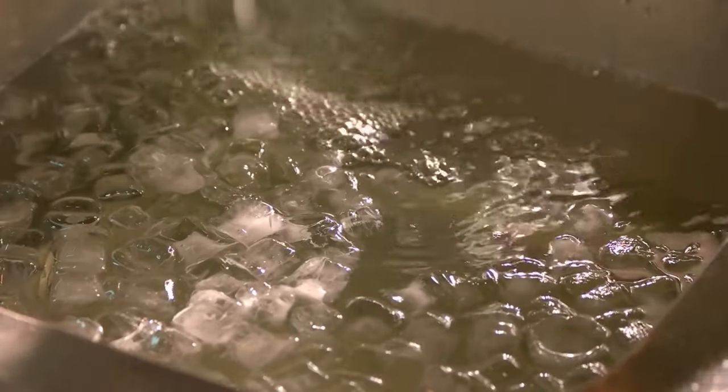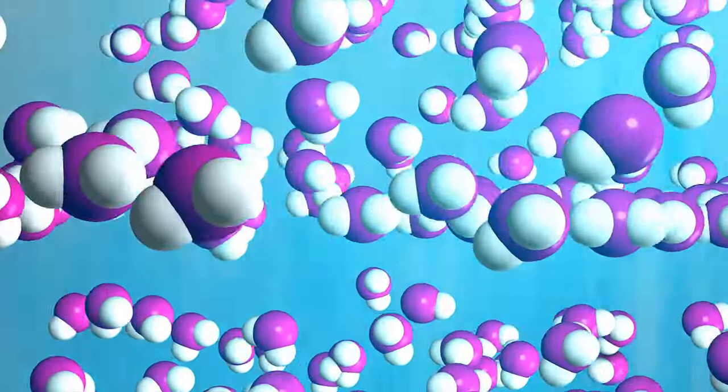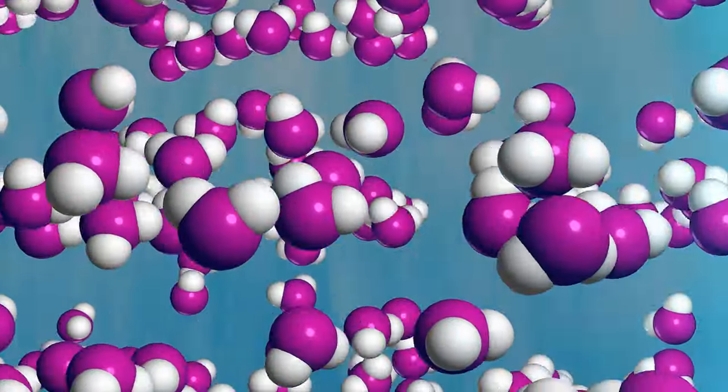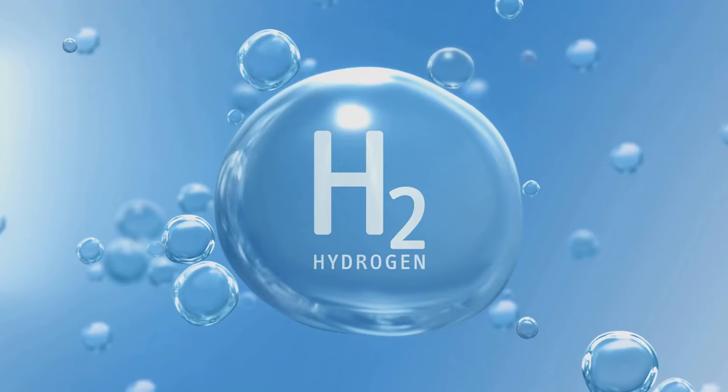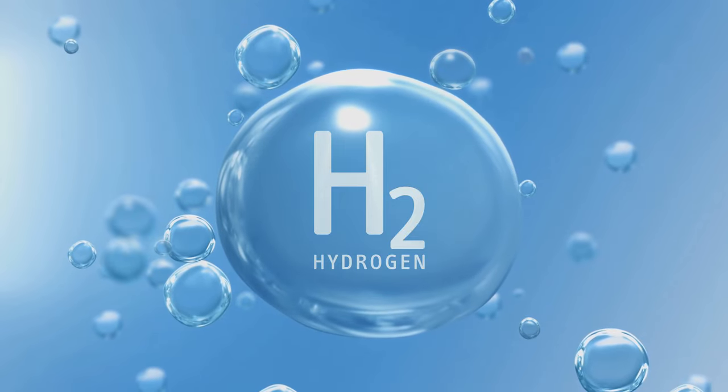When the pressure reaches 100,000 standard atmospheres, the hydrogen-oxygen bonds in the water molecules break, and it directly transforms into high-density solid ice crystals. But this substance is not the ice we usually see, but a polymer of hydrogen and oxygen atoms.